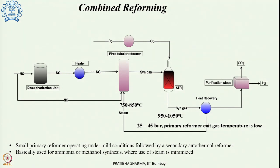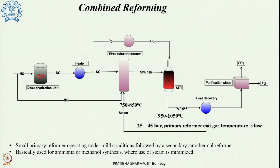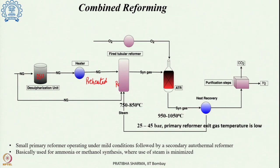Now let us look at the process. Natural gas is pre-treated — desulfurization is carried out in the desulfurization unit. After removal of the sulfur-containing compounds, it is preheated and along with steam it is passed into the primary reformer, wherein it undergoes the reforming reaction.